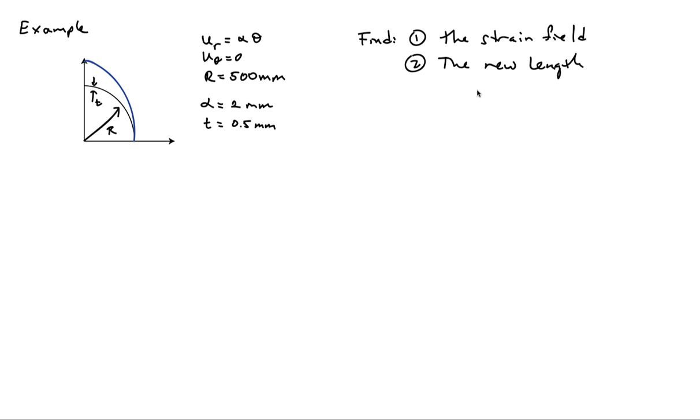In this example I'd like to look at using our strain displacement relations in polar coordinates. So what I want to do is consider a thin band of material and it has a radius of 500 millimeters and it has a thickness of half a millimeter, so it's really quite thin.